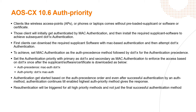I'll also explain how this feature can be achieved with 10.5, but there is a lot of manual intervention an admin has to go through. Remember, re-authentication will be triggered for all high priority methods, not just the final successful authentication method. If the supplicant certificate expires, Mac auth will automatically be triggered and the client returns to a Mac-authenticated role. That way, the supplicant will always have one or another authenticated role, and can download patches and get back onto the network automatically without IT admin intervention.